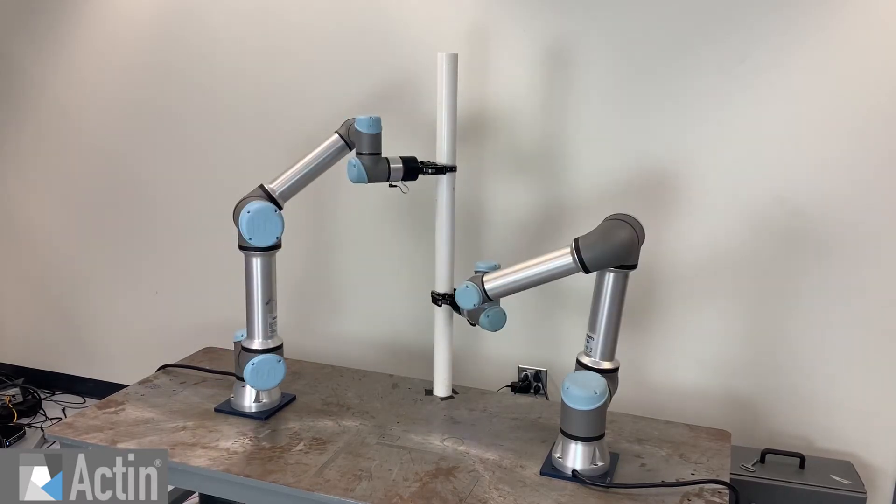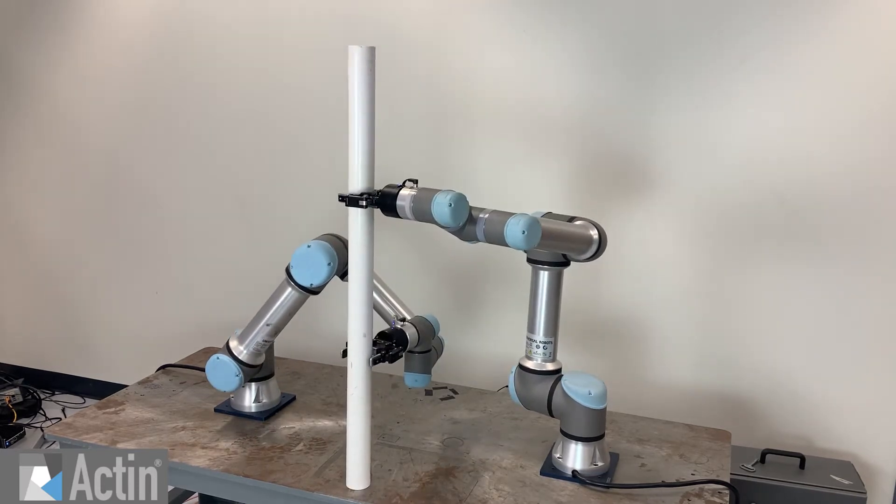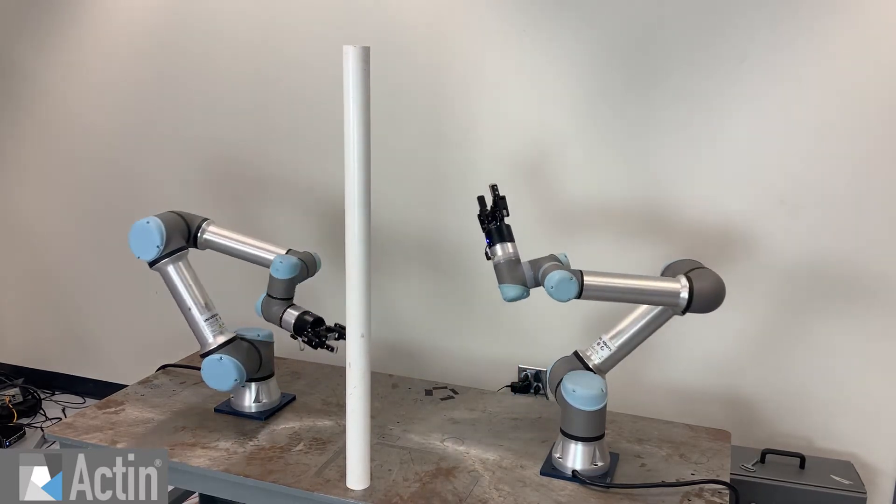These arms are modeled together in Actin and have a shared state of the world and a shared motion solution, which allows them to work together while avoiding collisions, joint limits, and singularities.